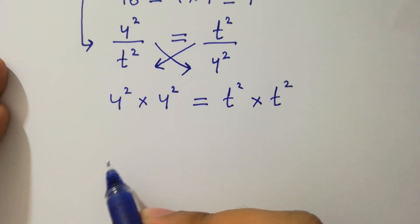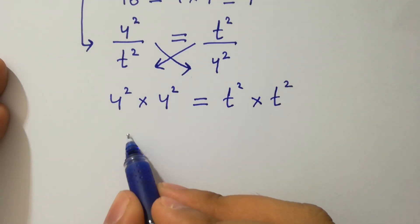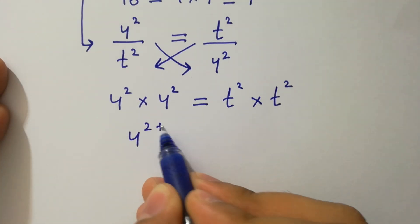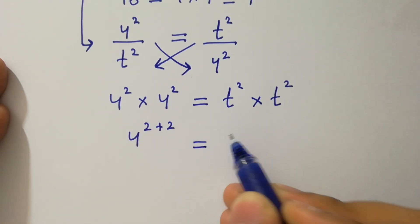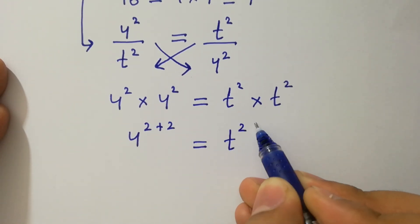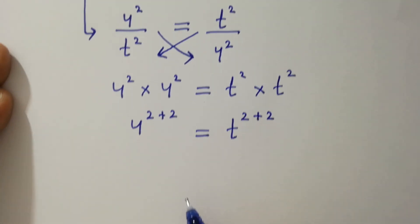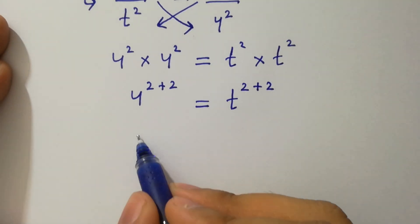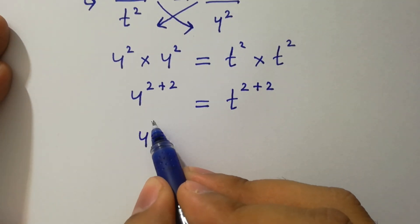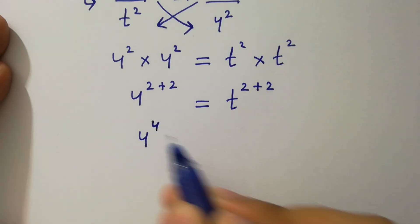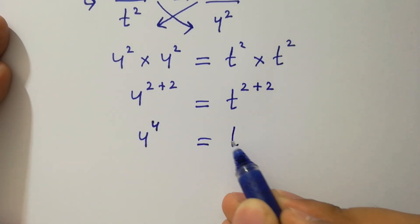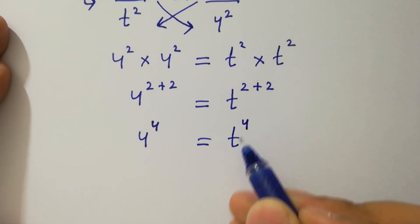Using the rule base a to the power z, we have 4 to the power 2 plus 2 equal to t to the power 2 plus 2. So 4 to the power 4 equals t to the power 4.